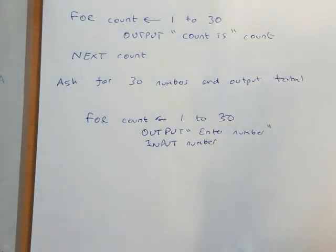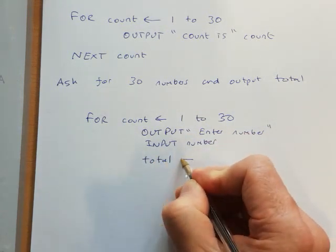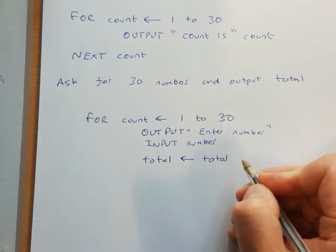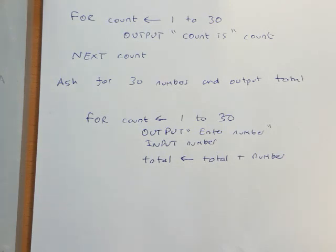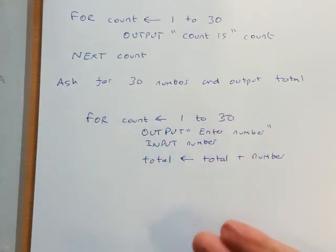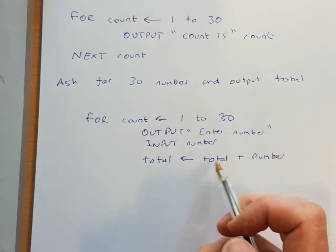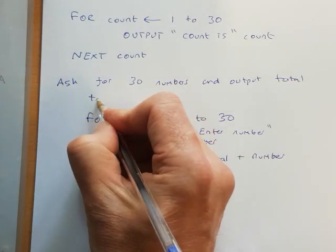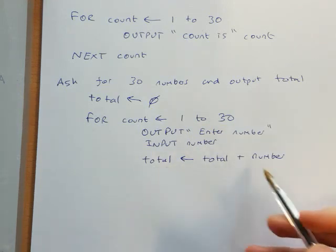And we need to total them as they're being entered, so we say total equals total plus number. Okay, so straight away, we haven't got a value for total, and this is the way I would answer it if I was answering in an exam - you haven't got time to design, you haven't got time to plan where everything's going to go, so you react to the answer as you're doing it. So I haven't got a value for total, so let's just declare that at the start, so total equals zero.